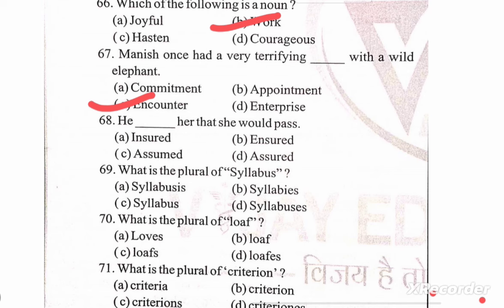He blank space her that she would pass. Options: insured, assumed, assured. Correct option is assured. Next question: what is the plural of syllabus?